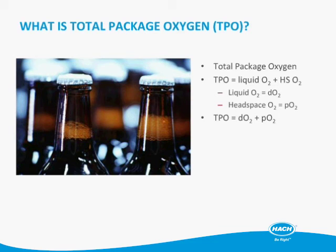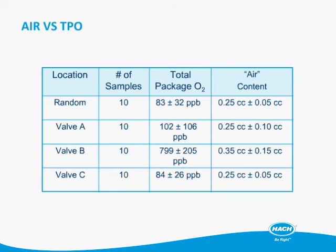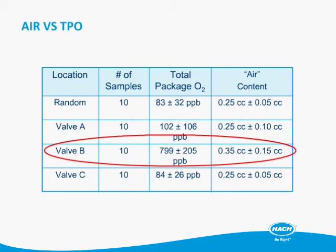If we compare air versus TPO, we see that you can have very similar air contents with really different total package oxygen. Looking at valve B: we had an order of magnitude higher total package oxygen from bottles off of one filler valve — 10 samples at 800 parts per billion, versus the rest of the filler at around 80 parts per billion. But the air content didn't really change — 0.25 in the 80 to 100 ppb packages and 0.35 in the 800 ppb package.